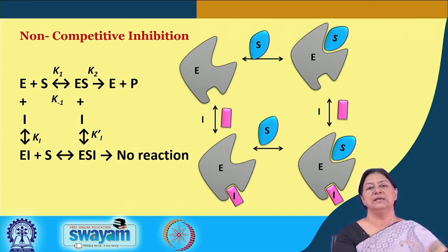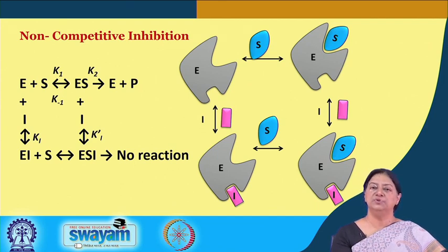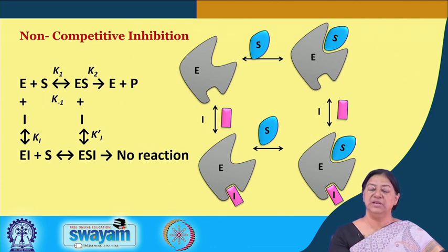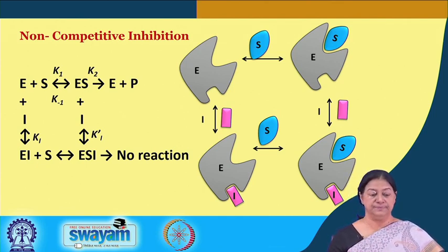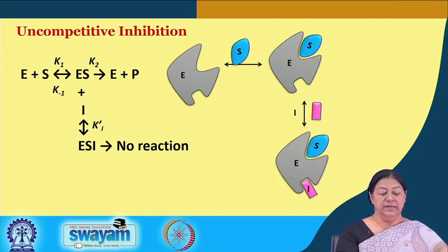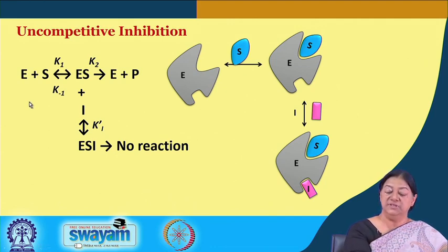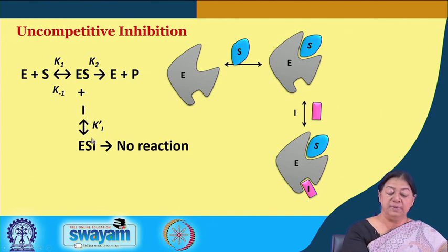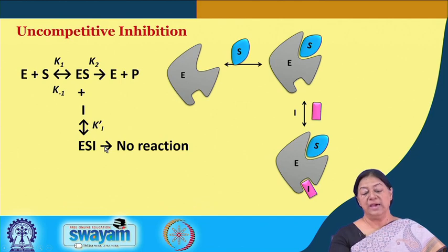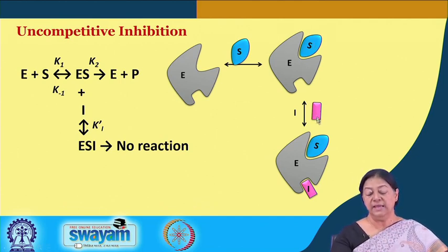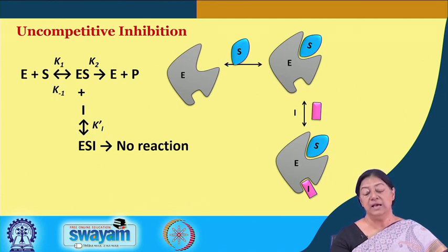To design a competitive inhibitor, we look for a substrate analog — a molecule that resembles the substrate — that will go to the same active site but will not make the enzyme produce any product. In uncompetitive inhibition, the enzyme does not interact with the inhibitor directly; instead, the inhibitor interacts with the enzyme-substrate complex. This forms a ternary complex in which no reaction is possible.